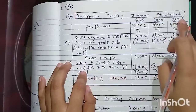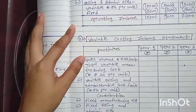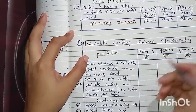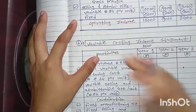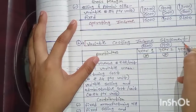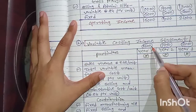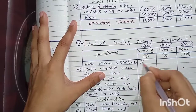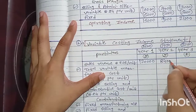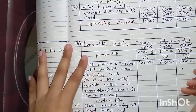Now we go for the variable costing income statement. Sales will be the same because the number of units and selling price are the same. Sales units are 2,500 / 1,750 / 3,250, and selling price is still ₹48.